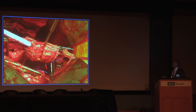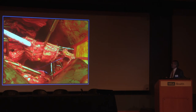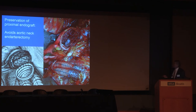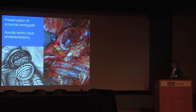One word of caution: with suprarenal fixation, removing the entire graft can bring some of the intima with the renal orifice — effectively an unintended renal endarterectomy. Since that experience, I suggest you don't have to remove that portion of the graft. You can control it with a clamp, cut the graft with wire cutters, and sew the remaining piece of endograft to the standard surgical graft — avoiding a blind endarterectomy of the perirenal aorta.